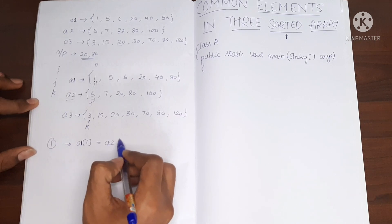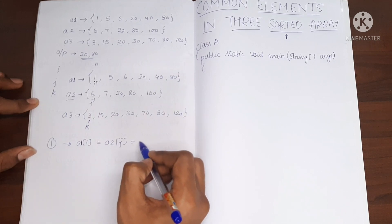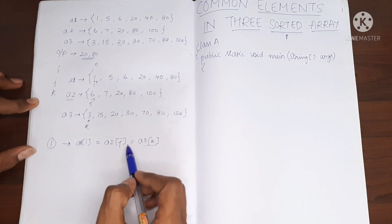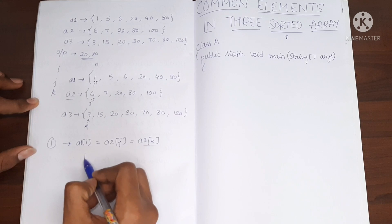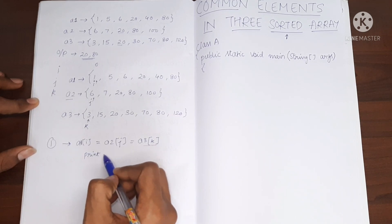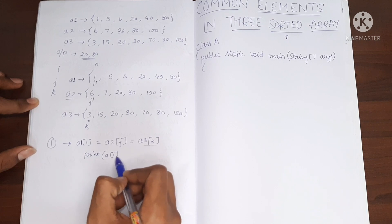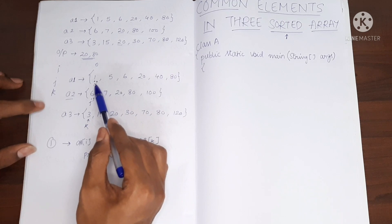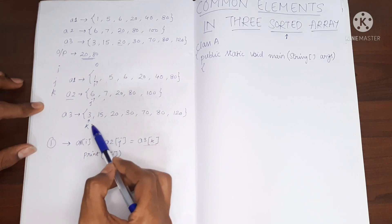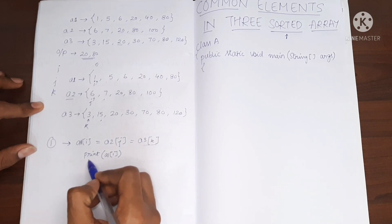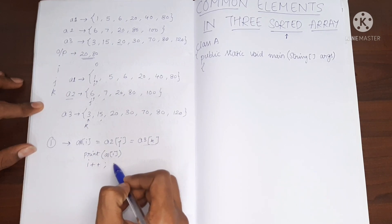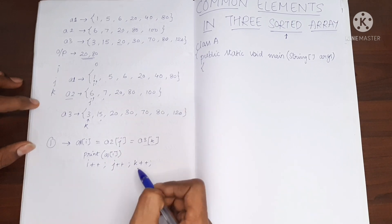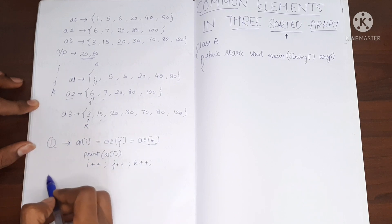The first step: I will check if the value present at i is equal to the value present at j, and that is equal to the value present at k. If all three are equal, then that element is a common element, so I will print any of these and then move i to the next location, j to the next location, and k to the next location — that is, i++, j++, and k++.